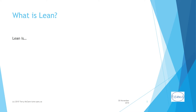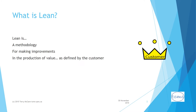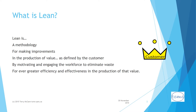Here is my working definition that I will discuss over the rest of the series: lean is a methodology for making improvements in the production of value, as defined by the customer, by motivating and engaging the workforce to eliminate waste for ever greater efficiency and effectiveness in the production of that value. Put simplistically, lean is about striving to produce more with less. The rest of this presentation teases out this definition and looks at some foundational concepts and tools for achieving this goal.